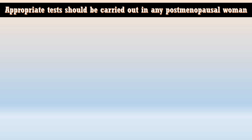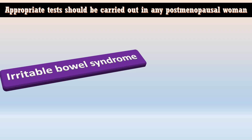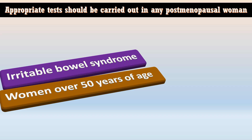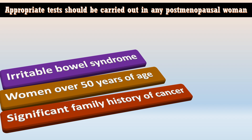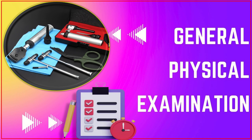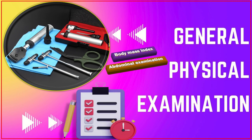Appropriate tests should be carried out in any postmenopausal woman who has developed symptoms within the last 12 months suggesting irritable bowel syndrome, particularly in women over 50 years of age or those with a significant family history of ovarian, bowel, or breast cancer. A full physical examination is essential and should include body mass index, abdominal examination to detect ascites and characterize any palpable mass, and vaginal examination.